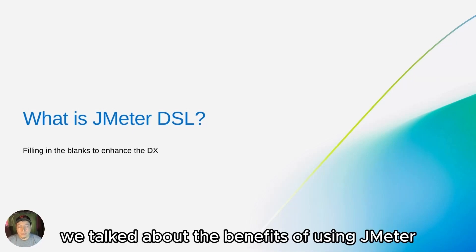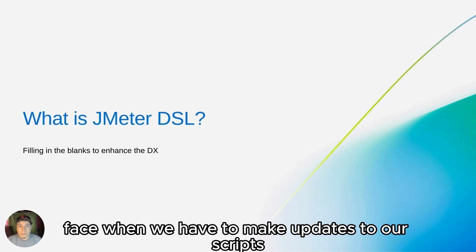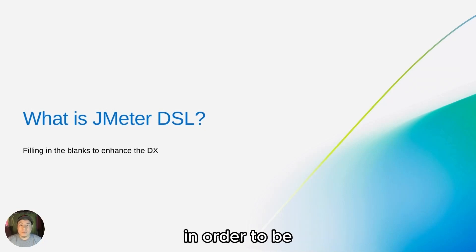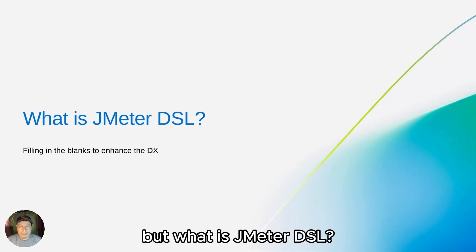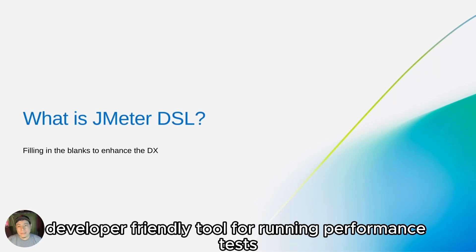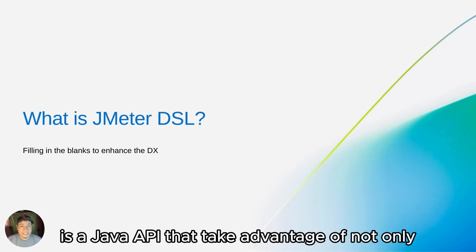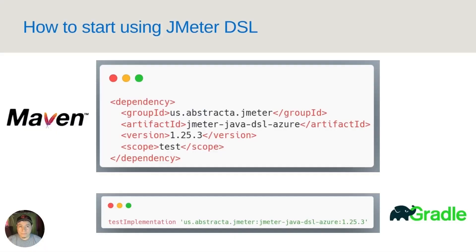We talked about the benefits of using JMeter and we also talked about the complexity we have to face when we have to make updates to our scripts. This is where JMeter DSL appears, in order to be the link between all the positives that JMeter has and what could be better. JMeter DSL is an open source, developer-friendly tool for running performance tests as code, both locally, on CI/CD, and at scale. JMeter DSL is a Java API that takes advantage of not only JMeter — using it as an engine — but also coding benefits as well.